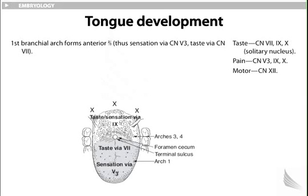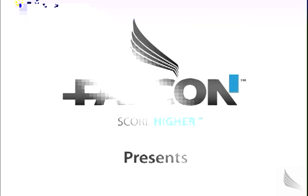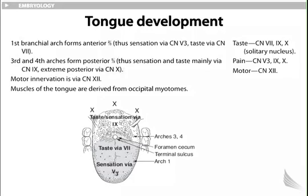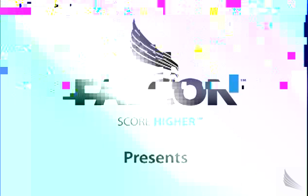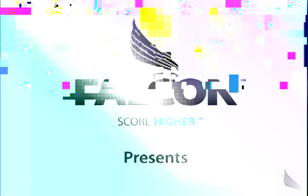Tongue development: the first branchial arch forms the anterior two-thirds — sensation via cranial nerve five, branch three, which is the mandibular branch of the fifth cranial nerve (trigeminal). Taste via facial nerve, seventh cranial nerve. Third and fourth arches form the posterior one-third — sensation and taste mainly via glossopharyngeal. Extreme posterior innervation is via the vagus. Motor innervation is completely via the hypoglossal, cranial nerve twelve. All muscle cells of the tongue are derived from occipital myotomes. In summary: taste via cranial nerves seven, nine, and ten to the solitary nucleus; pain via trigeminal branch three, nine, and ten; motor completely hypoglossal, cranial nerve twelve.